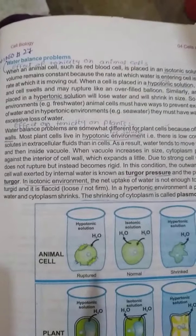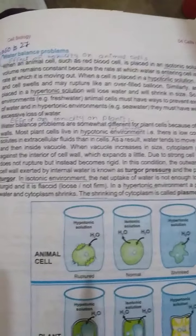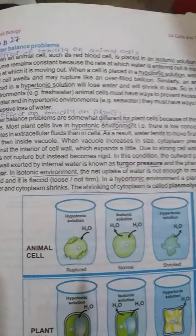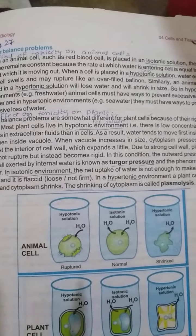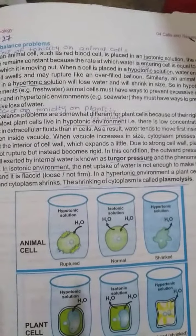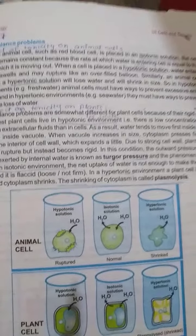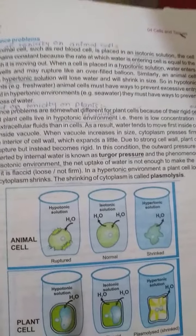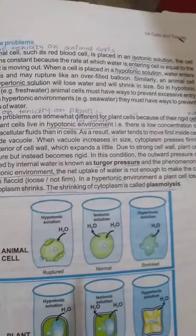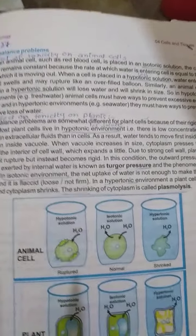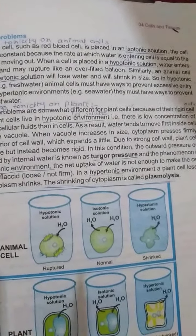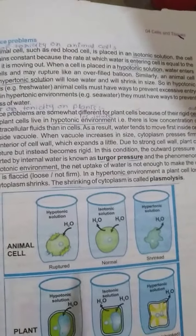In a hypotonic solution, water enters and the cell swells up and may rupture like an overfilled balloon. In that solution, less solute is present and solvent is already present in large concentration — the solvent is mostly water. So if water is already present in large amount and more water enters, the cell swells up.